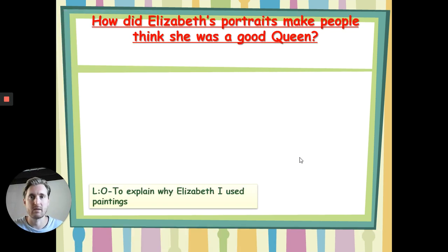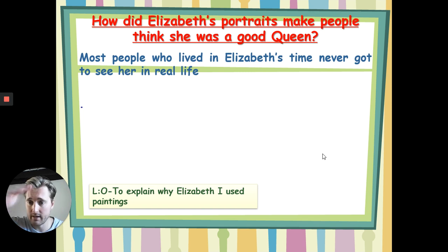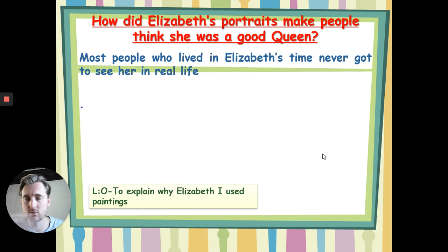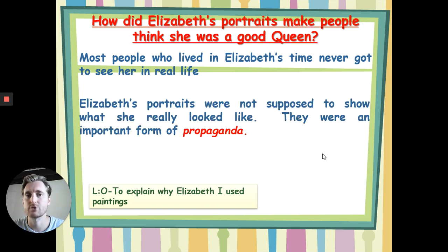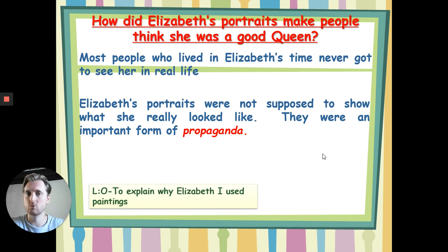So how did Elizabeth's portraits make people think she was a good queen? Most people who lived in Elizabeth's time never got to see her in real life. You have to remember from previously learning, you have a kind of feudal system — you have the king or the queen at the top, and the lords, and then the knights, and then the peasants. Peasants would never, ever get to see their queen. So Elizabeth's portraits were not supposed to show what she was really like — they were an important form of propaganda. Many poor people couldn't read, but if they saw a picture or anything to do with the queen, it would make her look really powerful and wealthy. That's what she wanted to come across as.